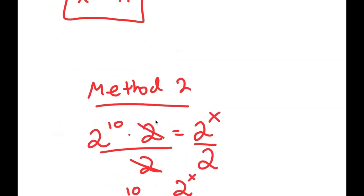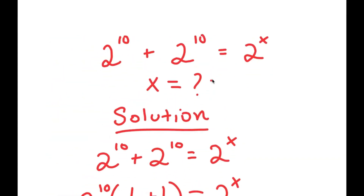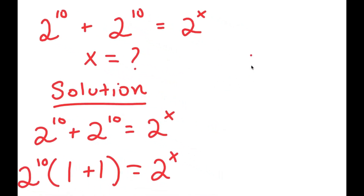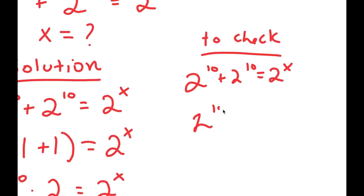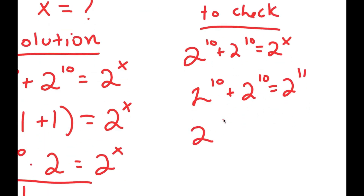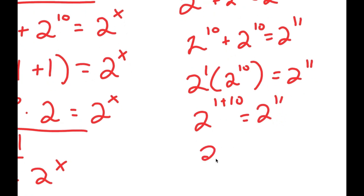The final step is to check our answer. Our equation was 2 to the power of 10 plus 2 to the power of 10 equals 2 to the power of x. With x equals 11, I get 2 to the power of 10 plus 2 to the power of 10 equals 2 to the power of 11. Since 2 to the power of 10 plus 2 to the power of 10 equals 2 times 2 to the power of 10, that's 2 to the power of 1 times 2 to the power of 10, which equals 2 to the power of 1 plus 10, which is 2 to the power of 11. Verified.